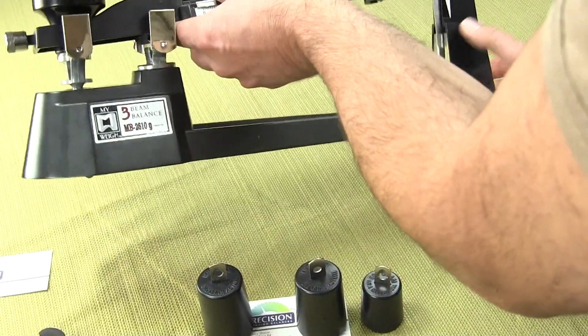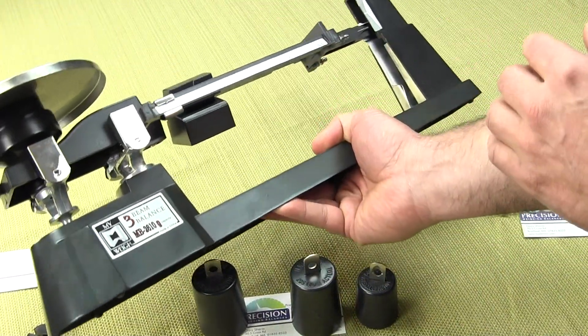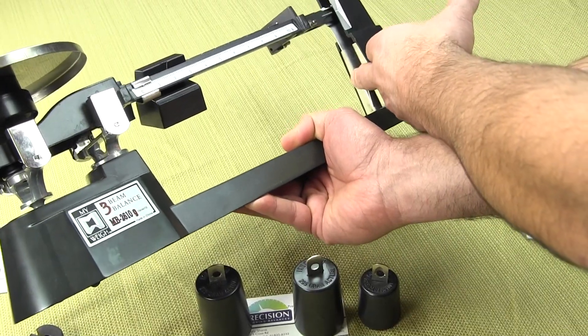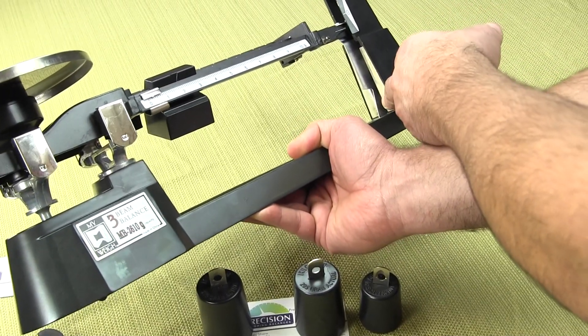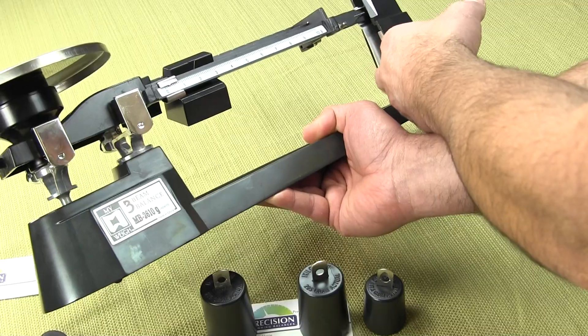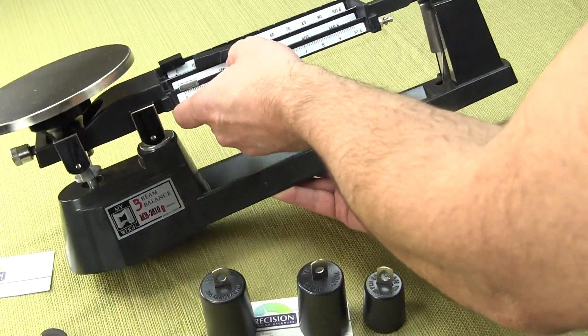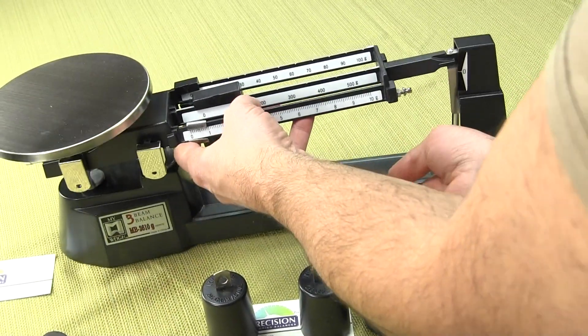On the other end of the three beam balance we have a fin here. This fin goes through two magnets to slow down the oscillation. So that's the basic three beam balance.